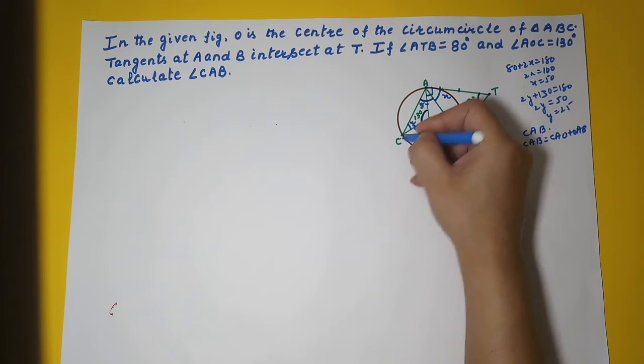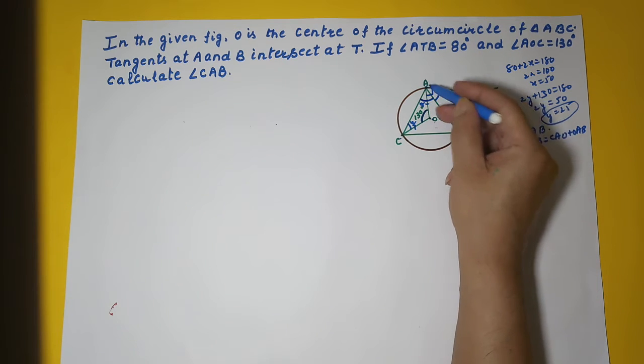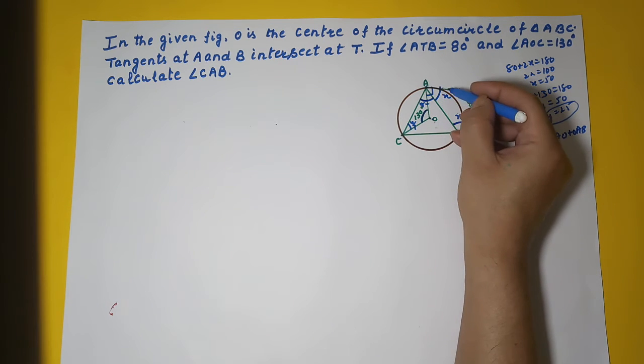Now CAO you have calculated, that is your Y. Now you need to calculate OAB.